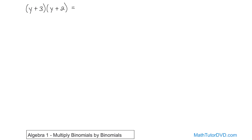So let's get started. y times y gives you y squared, because we add the exponents. Then y distributed into the 2, and there's a plus sign here, gives you 2y. Those two answers come from distributing the y into each of those terms. Now we have to look at the 3 because he's also on the outside here.